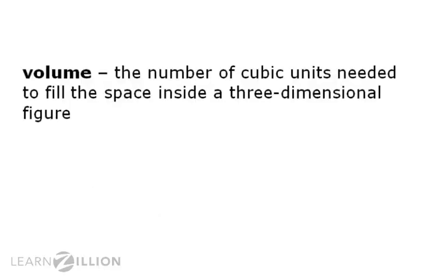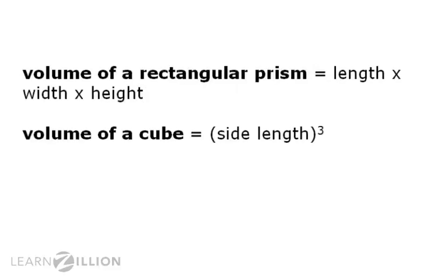Volume is the number of cubic units needed to fill the space inside a three-dimensional figure. We find the volume of a rectangular prism by multiplying its length times its width times its height. When we're dealing with cubes, the length, the width, and the height are all the same length. So we can simply cube the side length. In other words, we multiply the side length times the side length times the side length.